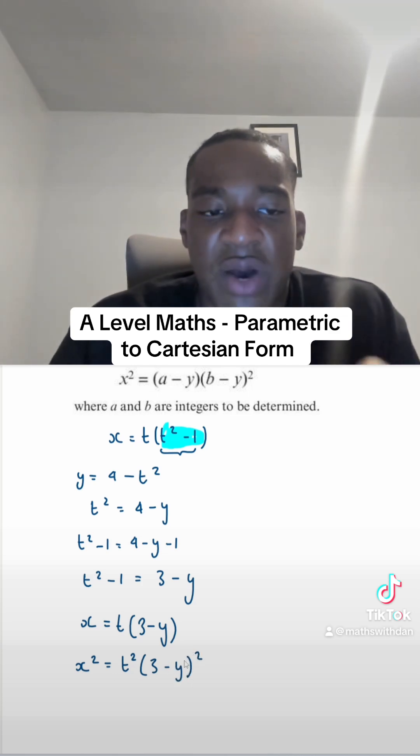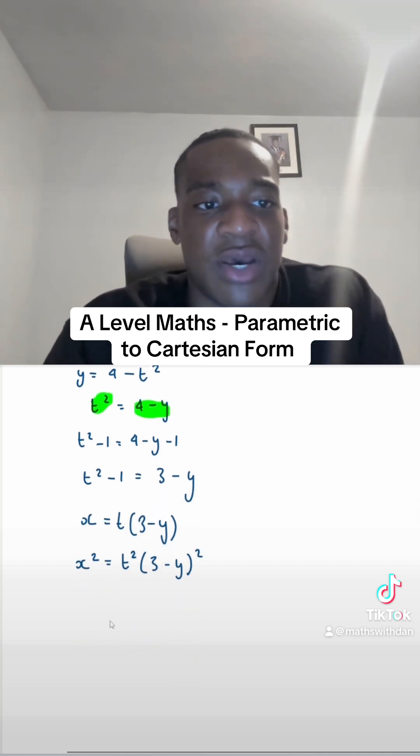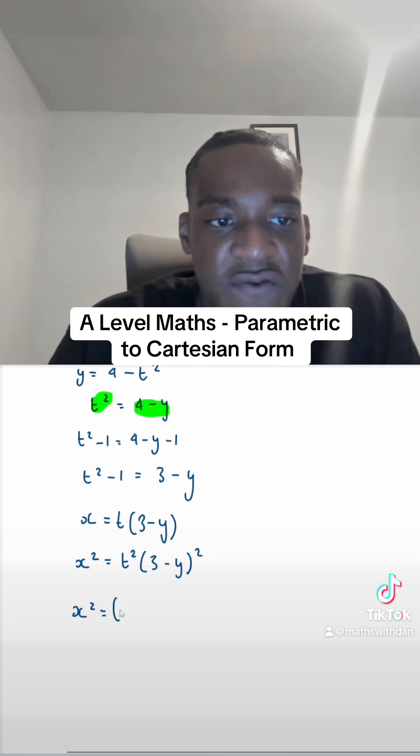Remember, we need it all in terms of y. That means I need t squared. But we know t squared is 4 minus y, which means x squared equals (4 minus y) times (3 minus y) squared, which means a equals 4 and b equals 3.